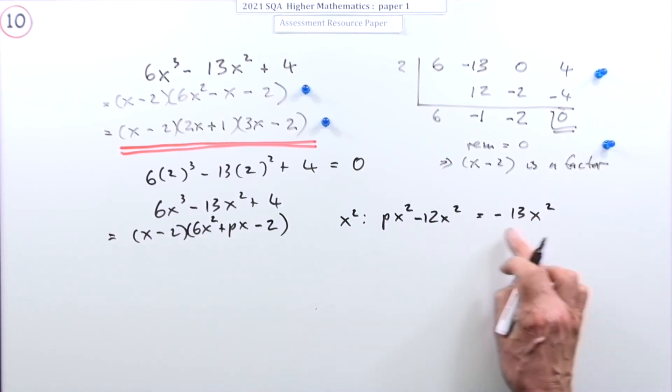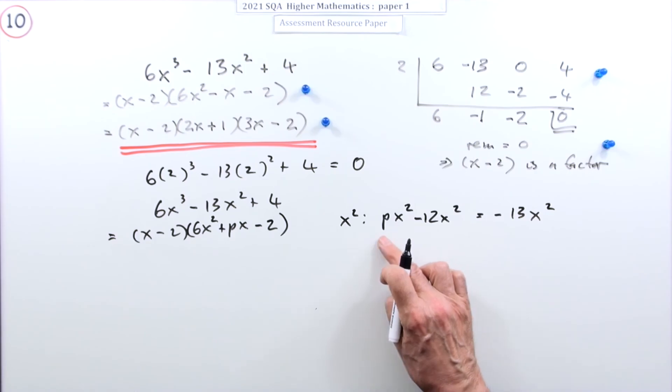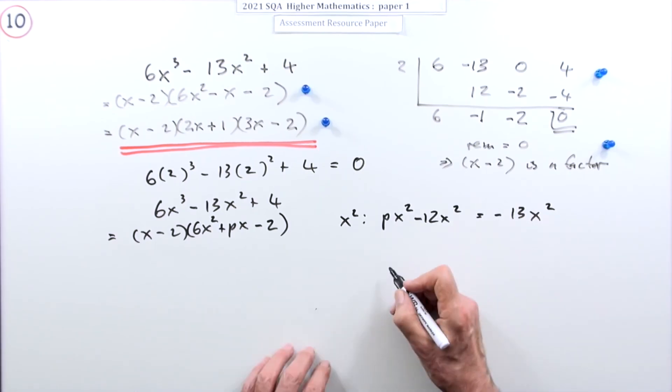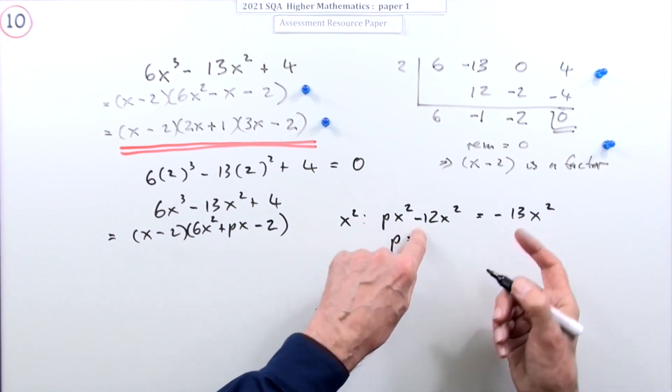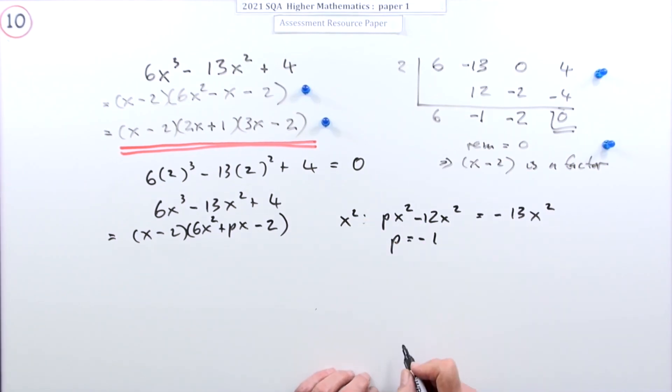So that would have to mean that p is equal to, well the negative 1 and a negative 12, makes that p would have to be negative 1.